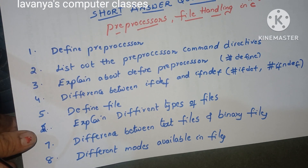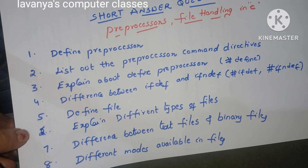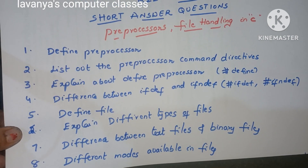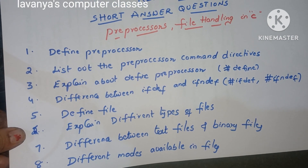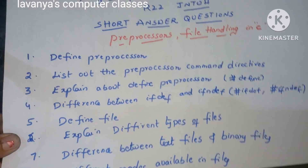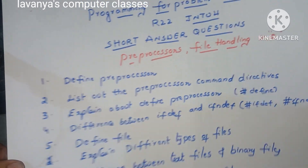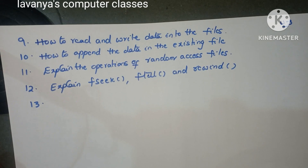Then a very important question is the different modes available in files — either modes in text files or modes in binary files: read mode, append mode, write mode, R plus, RB plus, like this.